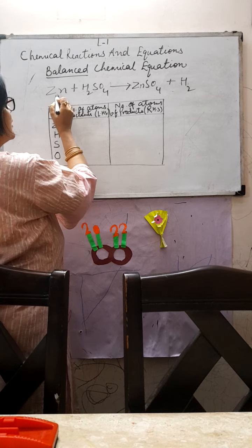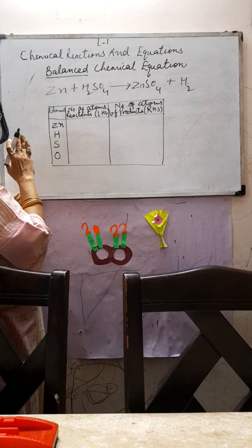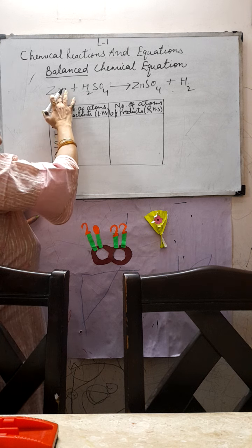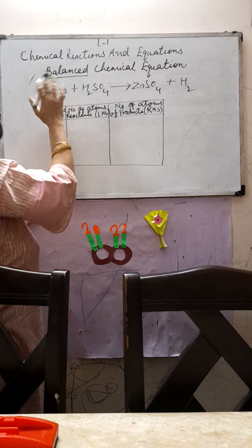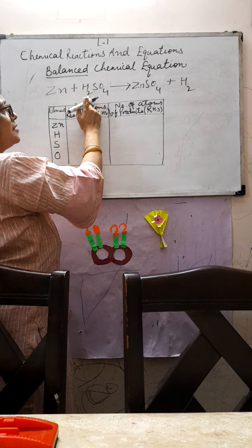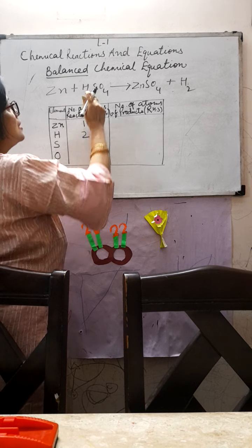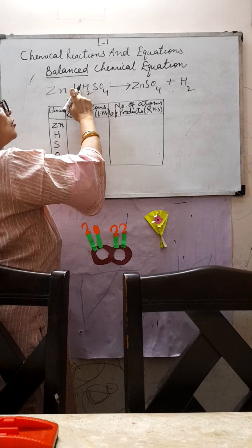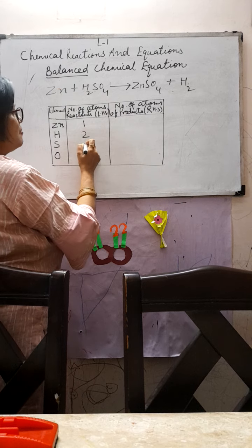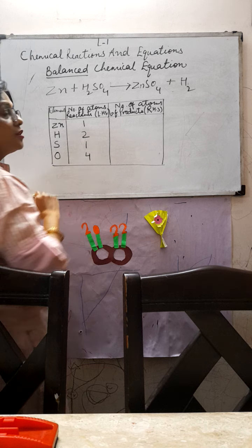Let us first count only the LHS — the left-hand side of the arrow, meaning before the reaction. How many atoms of zinc? One — nothing extra is written, so it is one. Hydrogen — from H₂SO₄, it is two. Sulfur — nothing extra written, so one. Oxygen — from SO₄, it is four atoms.